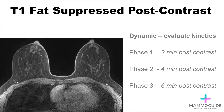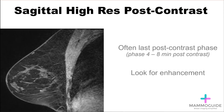Multiple phases or sequences are performed through the breast, usually at one to two minute intervals. This allows for subtraction sequences later to see whether the enhancement is progressing or washing out. A sagittal high-resolution post-contrast sequence can be very helpful in evaluating the location of an abnormality and is the most helpful sequence for planning an MRI-guided biopsy.